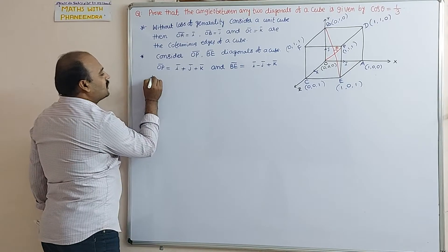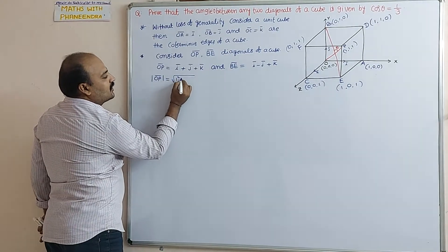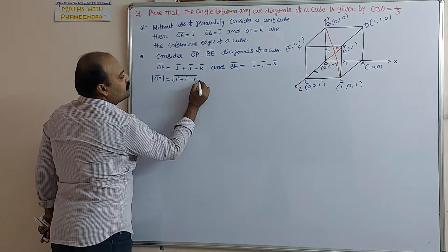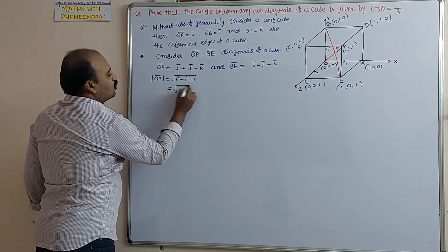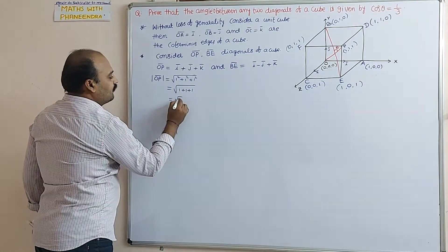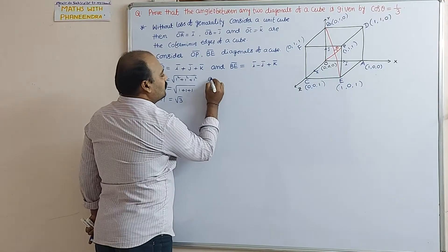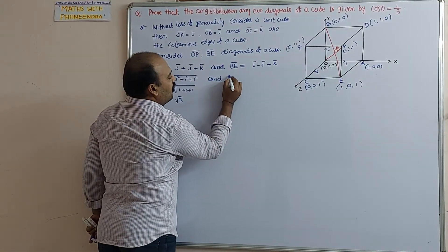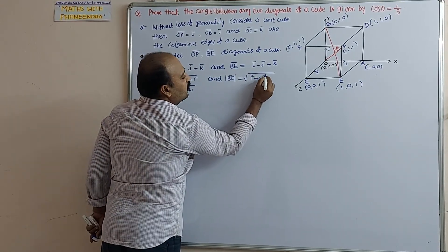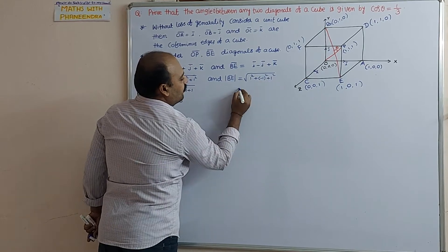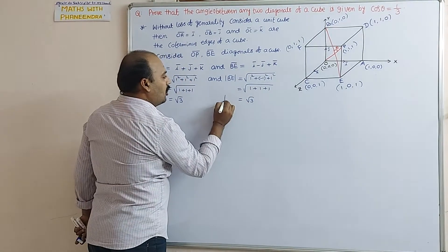The magnitude of OP-bar equals the square root of 1² + 1² + 1², which equals root 3. The magnitude of BE-bar equals the square root of 1² + (-1)² + 1², which also equals root 3.